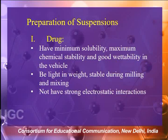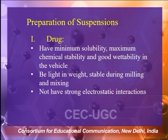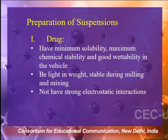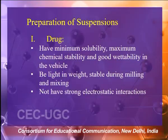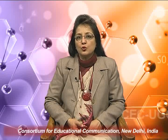The drug should be stable when it is size-reduced, which is generally referred to as the milling process, and it should have good stability on mixing. So the drug should be insoluble, chemically stable, good in diffusibility — that is, light in density — stable on size reduction, and at the same time it should not have strong electrostatic interactions. On dispersion, the drug should be repulsive so that particles do not allow each other to come closer and lead to aggregation. These are ideal characteristics when a drug is to be selected for formulation as a suspension dosage form.